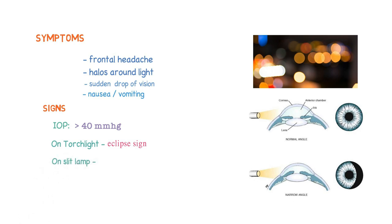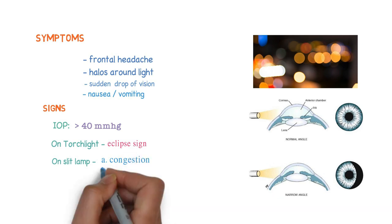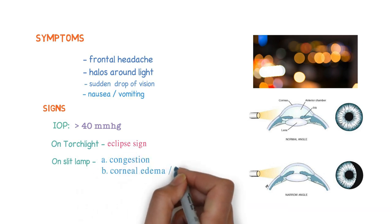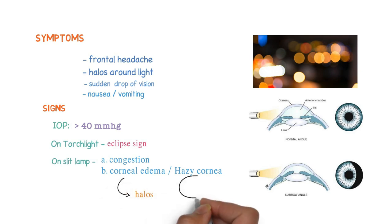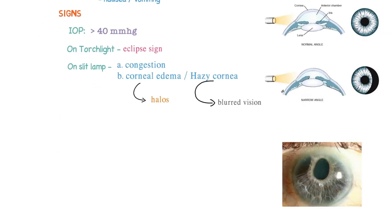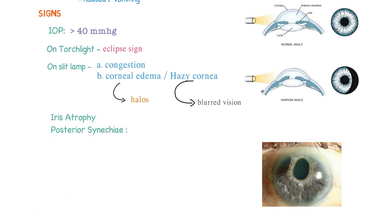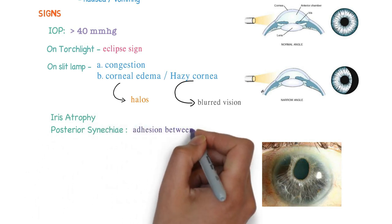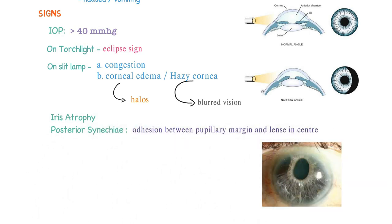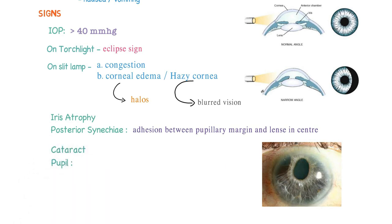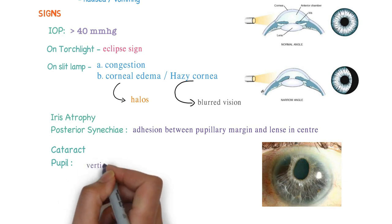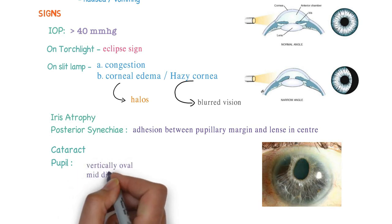On slit lamp, one can see congestion, corneal edema or hazy cornea. Due to corneal edema, there may be halos around lights, and if there is a hazy cornea, one can have blurred vision. There may be iris atrophy and posterior synechiae — adhesion between the pupillary margin and the lens centrally. One can also have cataract. The pupils are vertically oval, mildly dilated, and fixed.